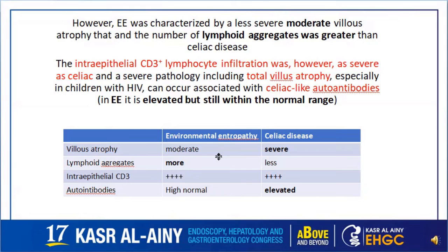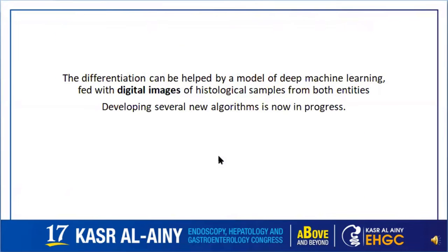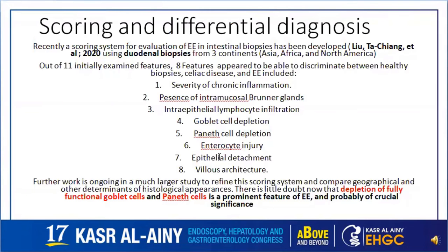Luckily, these antibodies are present at the high-normal end of the spectrum rather than the elevated levels seen in celiac disease. The differentiation between both entities can be assisted by a deep machine learning model fed with digital images of both entities. A scoring system was recently devised using eight histological criteria to confidently differentiate between the two, with goblet and Paneth cell depletion appearing as a prominent feature of environmental entropathy.